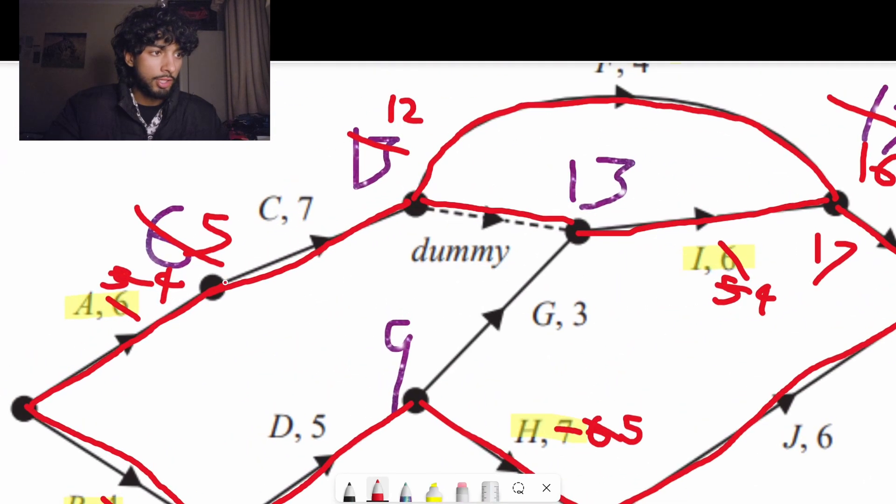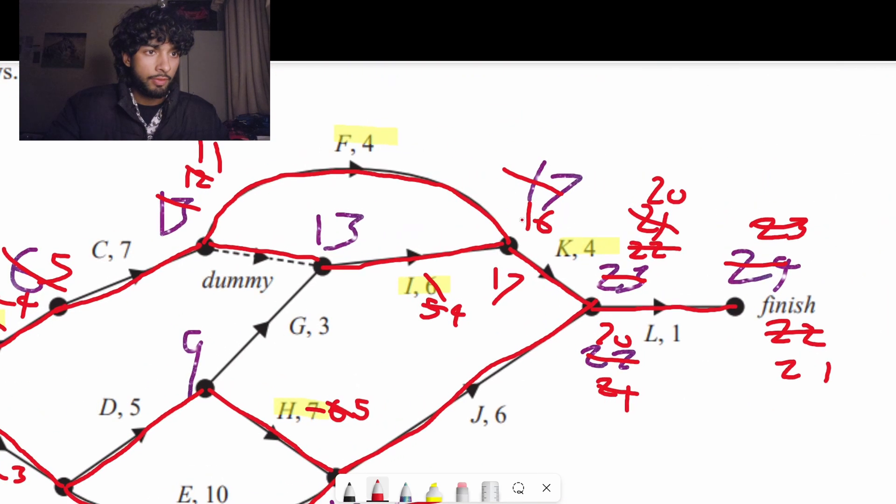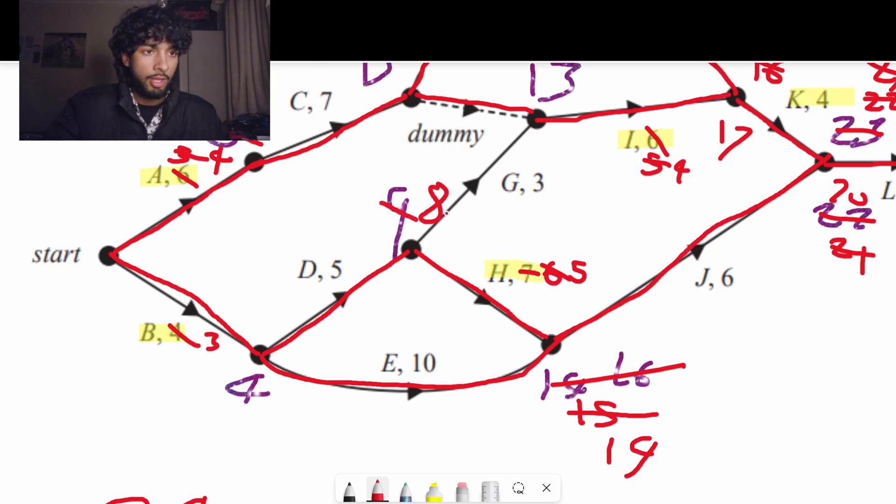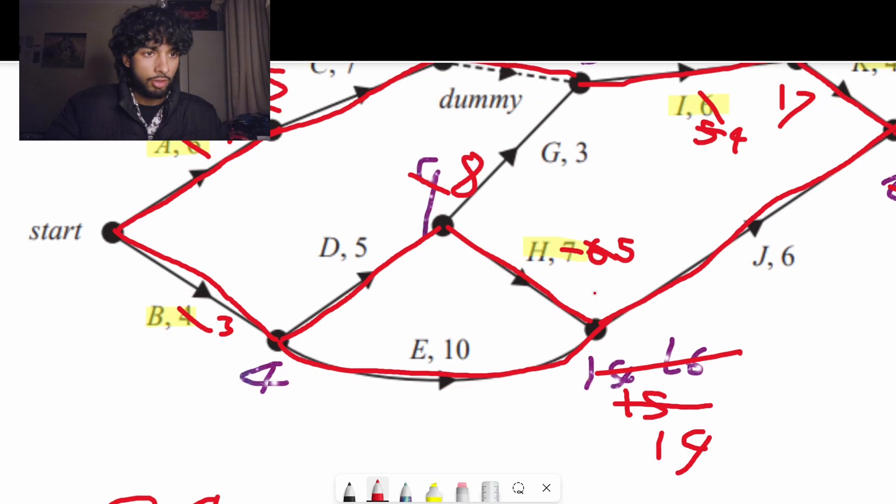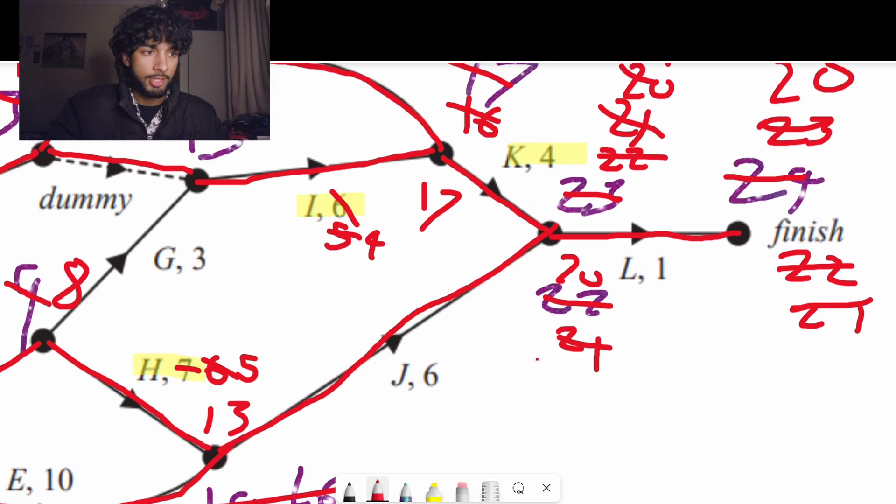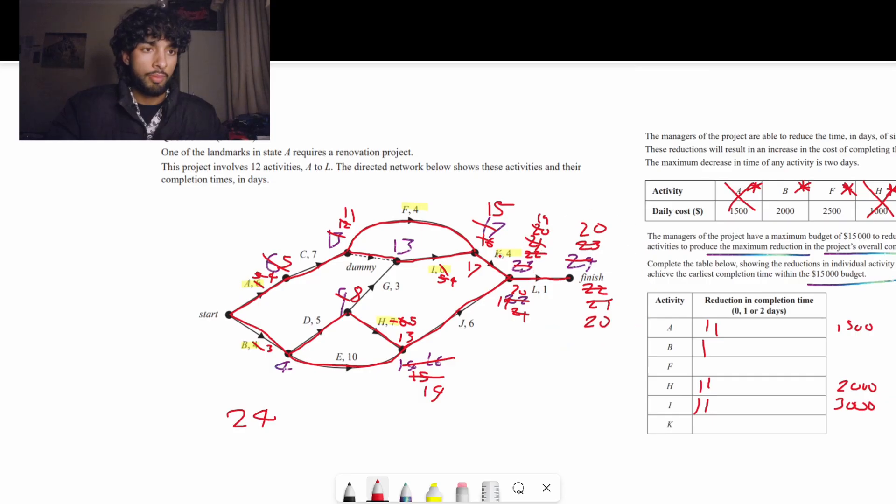So we're going to reduce a and b. So this becomes a 3 and this one becomes a 4. Let's recalculate the critical pathways. 4 plus 7 is now 11. That means this is 15. So top pathway is 20. 3 plus 5, this is now an 8. 8 plus 5 is 13. 13 plus 6 is 19. 19 plus 1 is 20. So right now our completion time is 20.